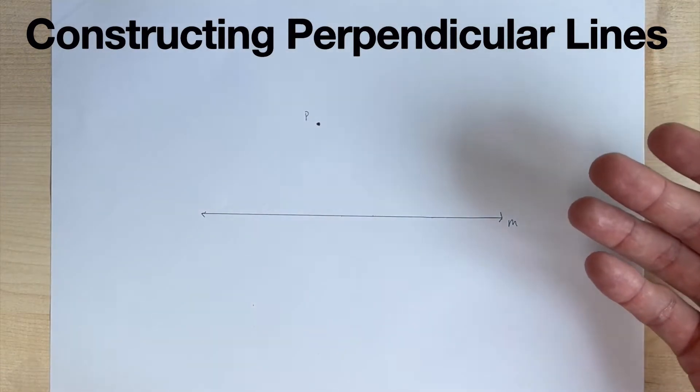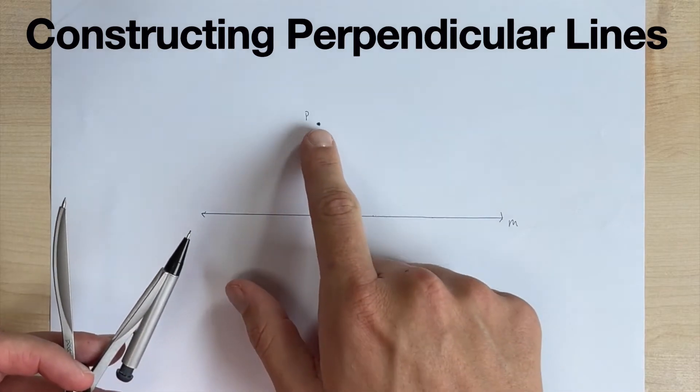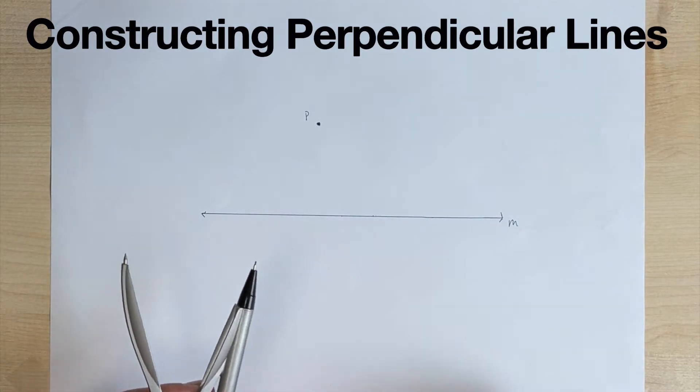So that's our setup. What we're going to do is construct a perpendicular line that goes through point P and is perpendicular to line M.